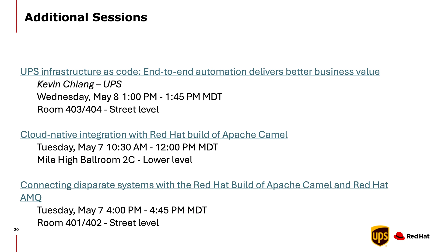Before we go, we wanted to give a shoutout — we have another session coming up at UPS with Kevin Chang, a fellow architect. You can see the growth from 2017's five clusters and a hundred nodes to today's twenty clusters and three thousand nodes. If you're more interested in the Red Hat build of Apache Camel, we have a couple of sessions on the Red Hat side as well. And if any of you are in the integration space, feel free to come up and talk to Alex and me — we'd love to hear about your use cases. Thank you.